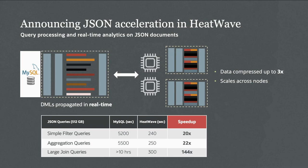JSON is a great companion to JavaScript stored procedures, and we've made JSON much faster. For simple filter queries on JSON objects, it's now 20 times faster than before. For aggregation queries, 22 times faster. For large joins, 144 times faster. At this point, JSON is now a practical data type to use for data stored in MySQL HeatWave, and you can use JavaScript stored procedures to manipulate and create that data.